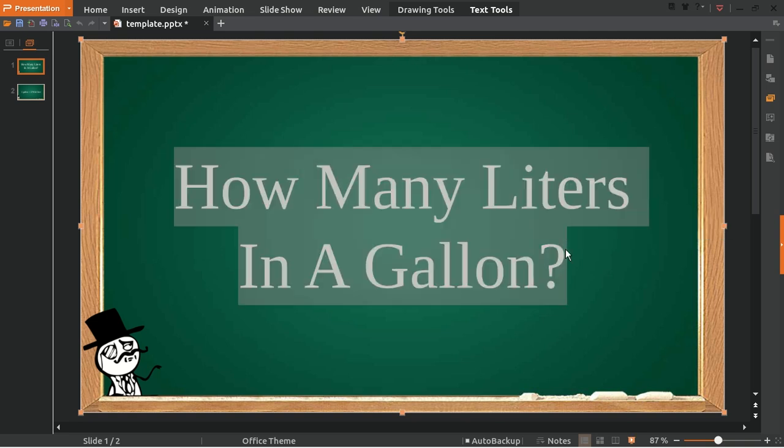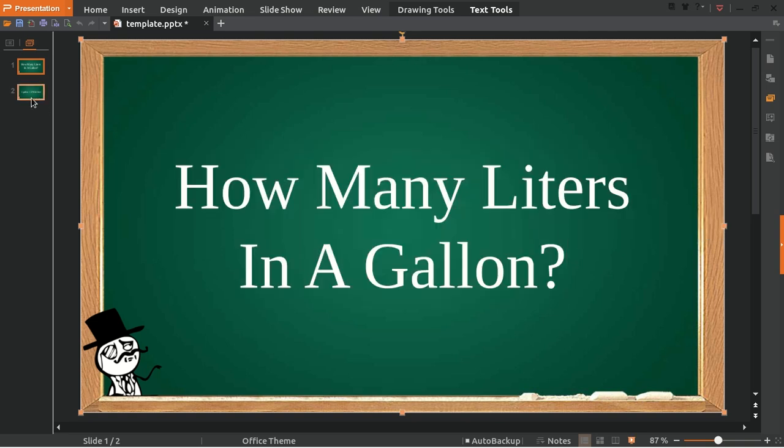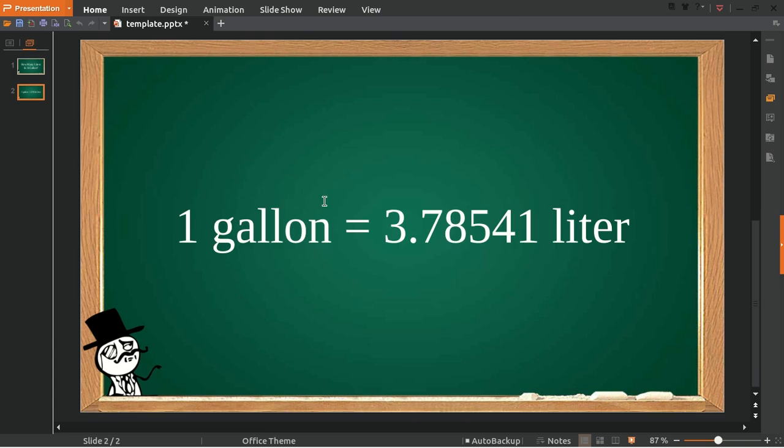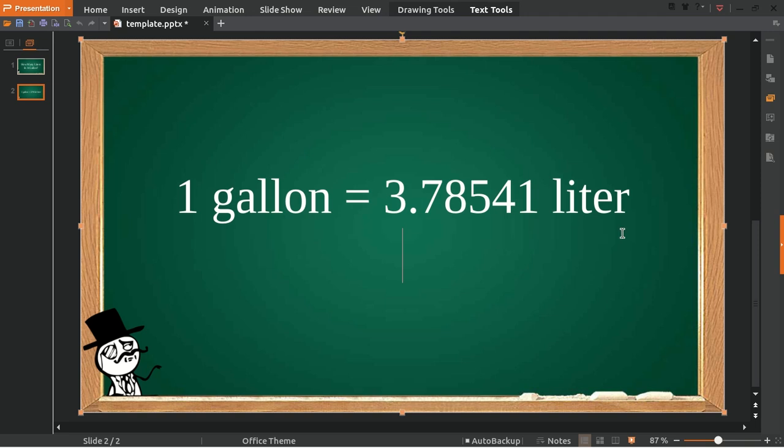To solve this problem, to answer this problem, I'll provide you with the formula. Here's the answer: one gallon is equal to 3.78541 liters. Now let's make a question.